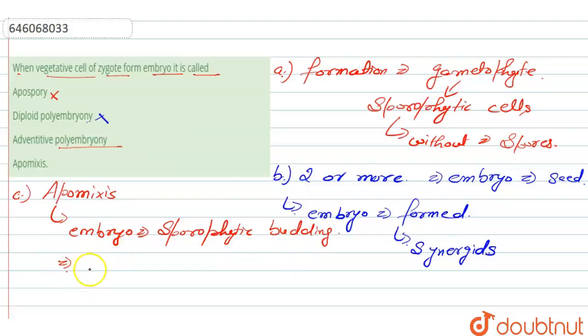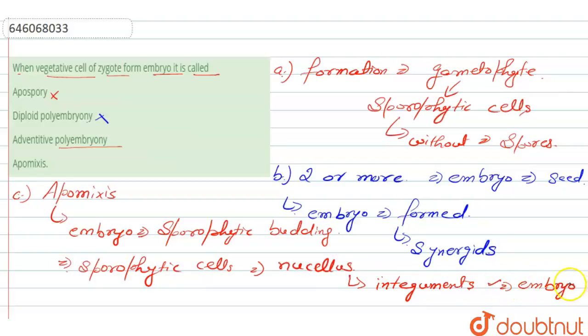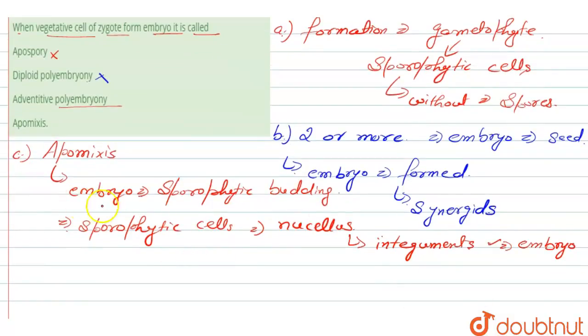And here one or more diploid sporophytic cells, one or more sporophytic cells either it can be in the nucellus or in the integument, that undergo stages of embryogeny and eventually it develops into a mature embryo.